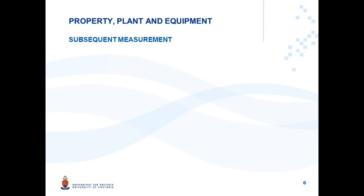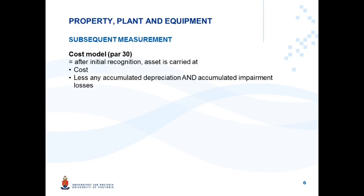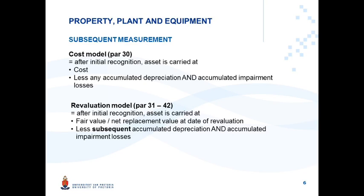In summary, subsequent measurement offers two options. Under the cost model, after initially recognizing and measuring all PPE at cost, the carrying amount is calculated as cost less any accumulated depreciation and accumulated impairment losses.